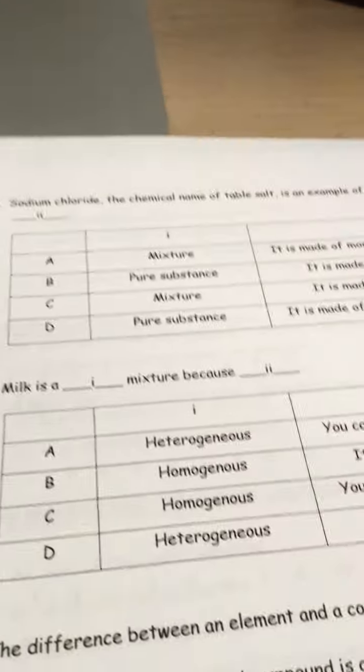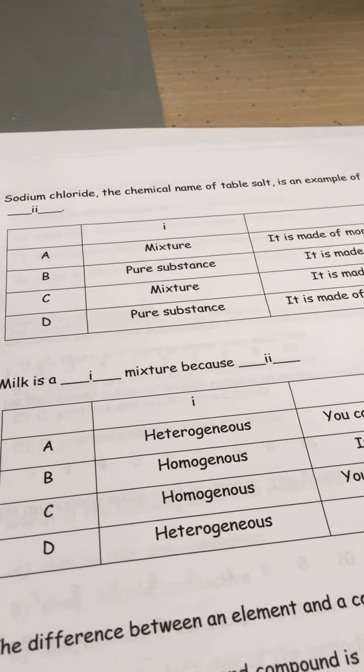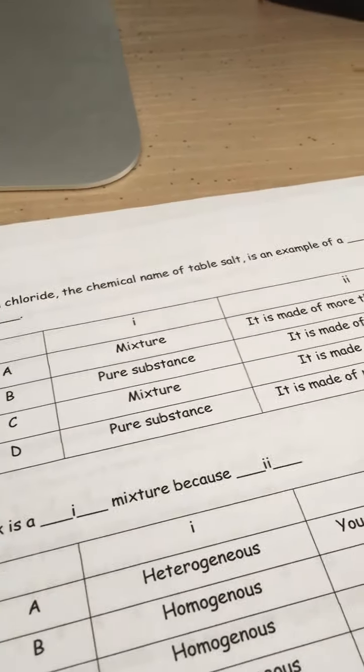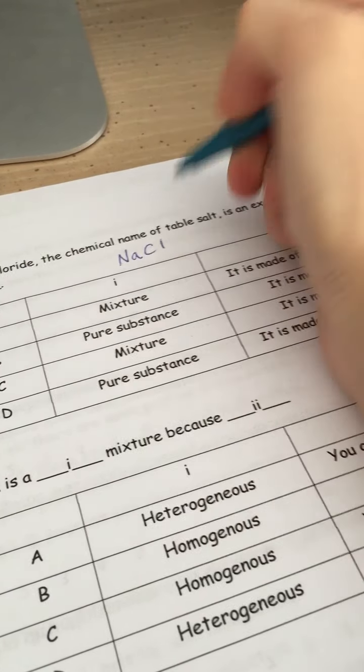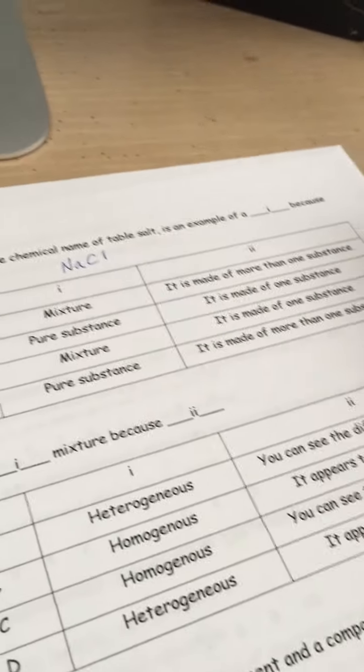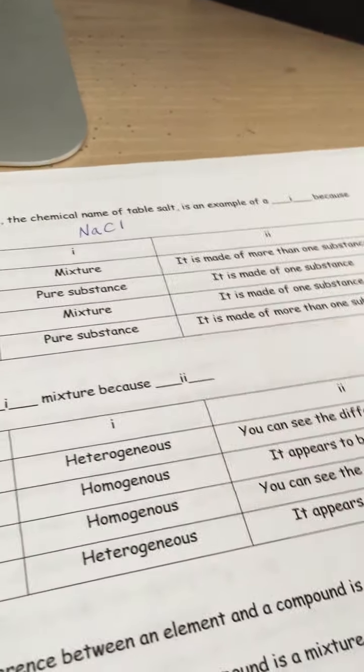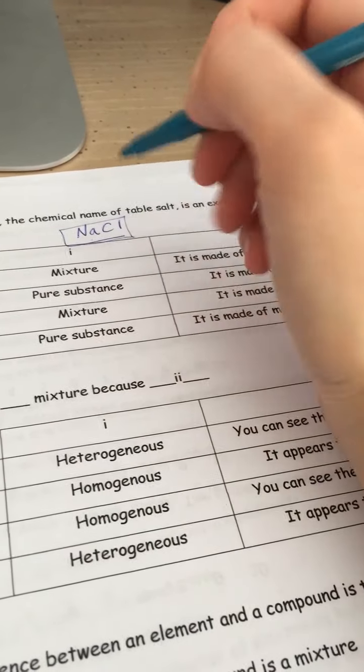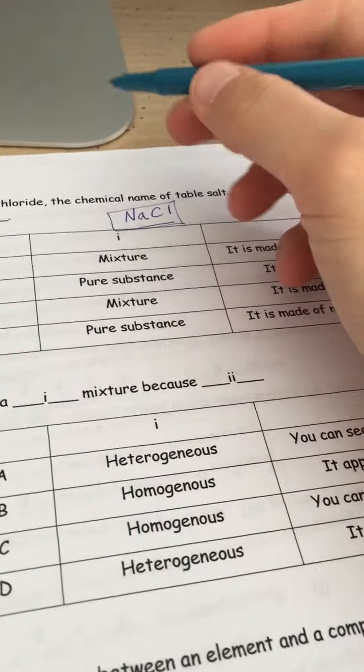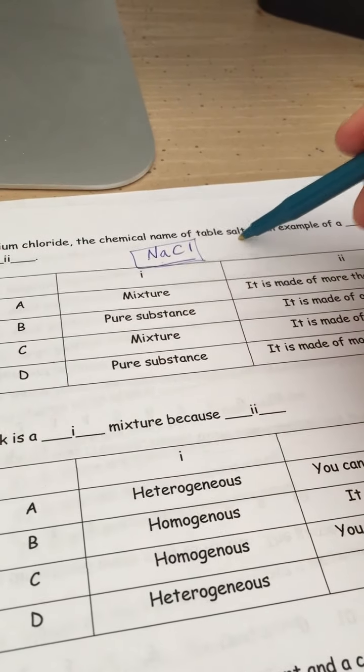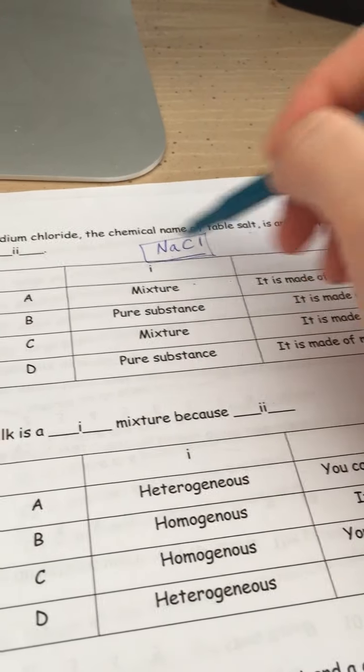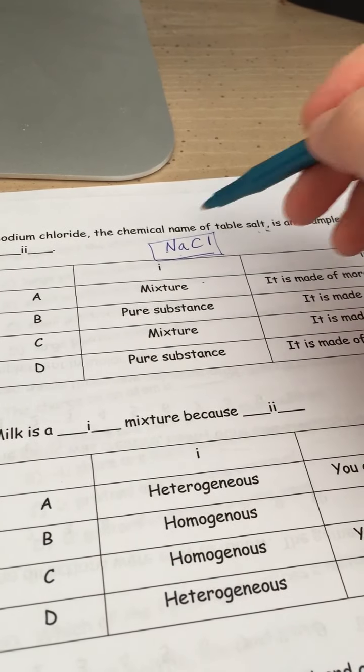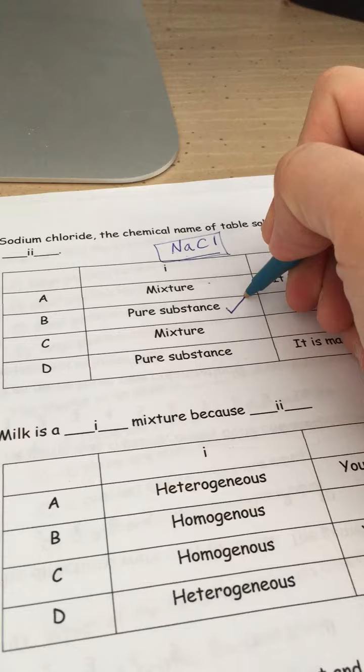Moving on to quiz review part two, numbers four onwards. This one's asking about sodium chloride. If we break that down, that is sodium and chlorine mixed together. You cannot break that down further. Sodium chloride, it comes as it is. It is table salt. This is not a mixture because you cannot break down salt into its components. That means it's a pure substance.